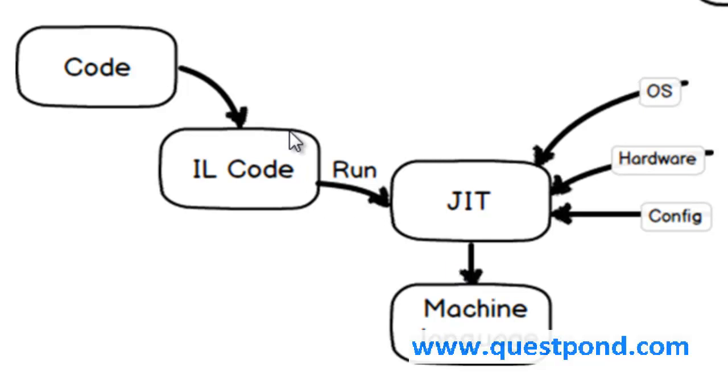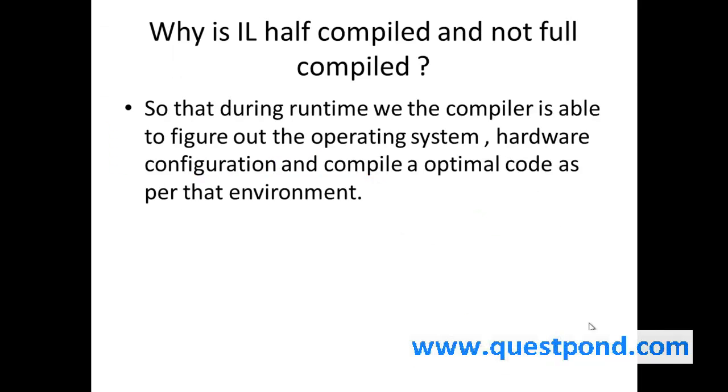In other words, why is IL code half compiled and not fully compiled? So that during runtime the compiler can figure out what is the operating system, what is the hardware, and compile the optimal machine language as per that environment. Summarizing: IL code is half compiled so the runtime compiler can determine the OS and hardware configuration and compile optimal code for that environment.